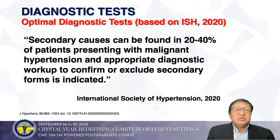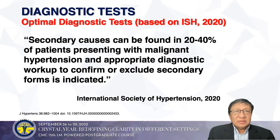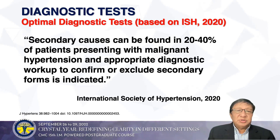Secondary causes can be found in 20% to 40% of patients presenting with malignant hypertension. The appropriate diagnostic workup to confirm or exclude a secondary form is indicated. We don't have to do a shotgun laboratory exam — it should be honed to the particular index of suspicion.